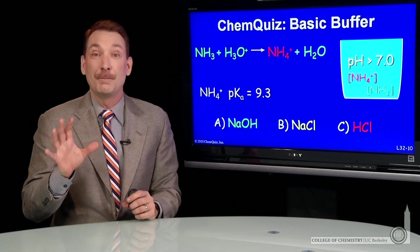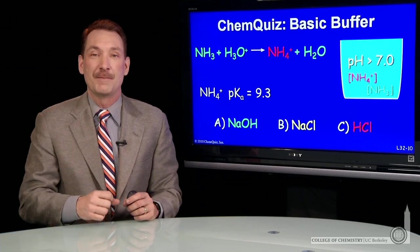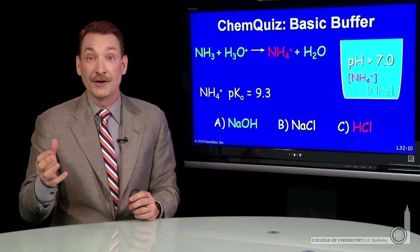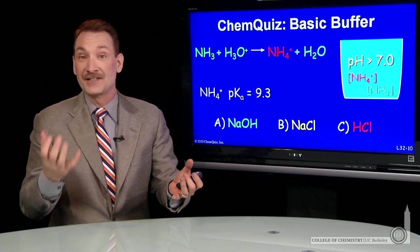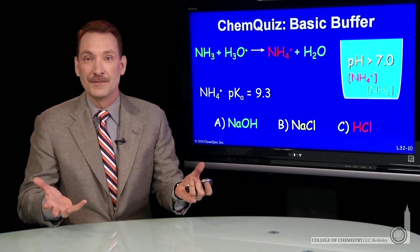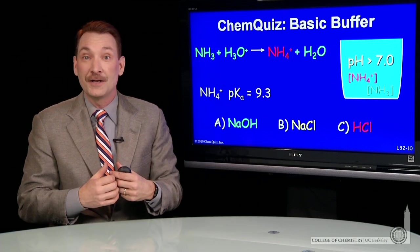We're talking about making a buffer from NH3, ammonia, the weak base. To make a buffer, you need a base and its conjugate acid, or an acid and its conjugate base. They need to be in about equal concentrations.